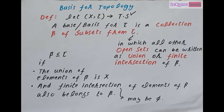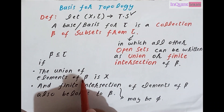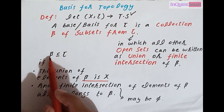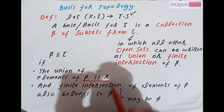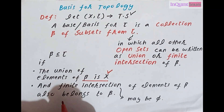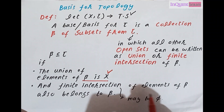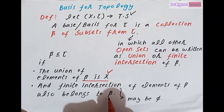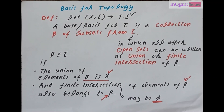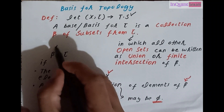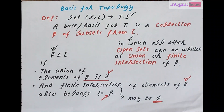The formal conditions are: first, the union of the elements of beta is x — meaning the elements of beta cover all parts of x. Second, the finite intersection of elements of beta also belongs to that subcollection beta, or the finite intersection may be phi. Under these conditions, we say beta forms a basis for our topology.